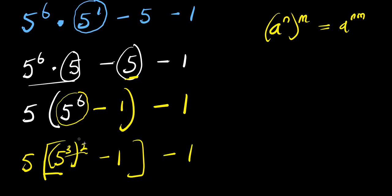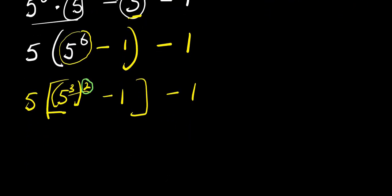If you observe, this is raised to the power of 2, and I would like to make use of the difference of two squares, because there is a minus sign already. To apply difference of two squares, I need to raise the 1 to the power of 2 as well. The good thing is 1 to the power of 2 is the same as 1, so it doesn't really matter. Now we have power 2 here and power 2 here with a minus between them, so we can apply the difference of two squares.